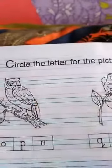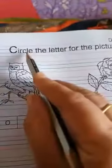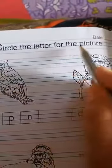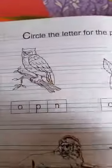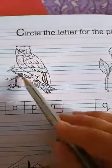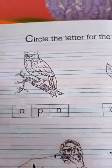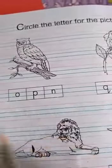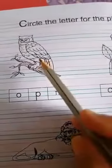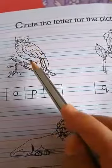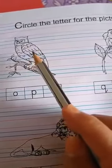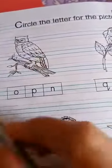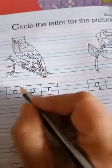I am turning the page now. So here, this is an activity page. Circle the letter for the picture. So there is a flower. Let's write.